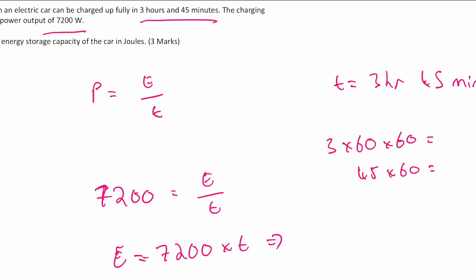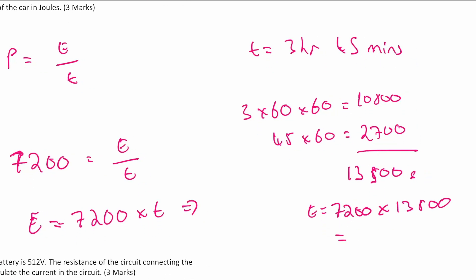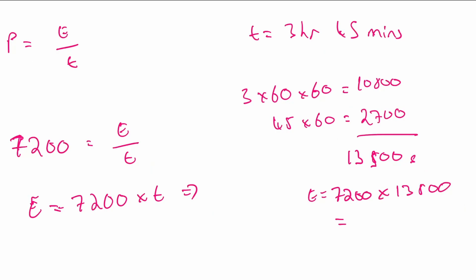If you do both of those on your calculator, you should get 10,800 for the first part. For the second part, it's just 45 times 60, which is 2,700. Add both together and you get 13,500 seconds. Now the time is in the right format, so the energy transfer is equal to 7,200 multiplied by 13,500. That comes out to approximately 77 million joules, or 77 megajoules.